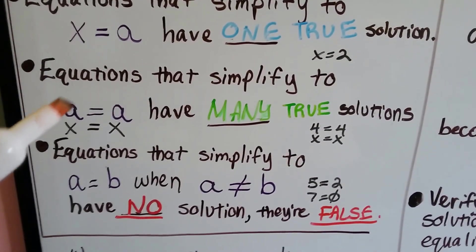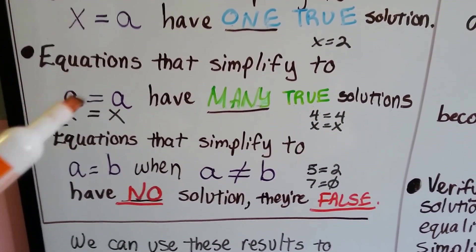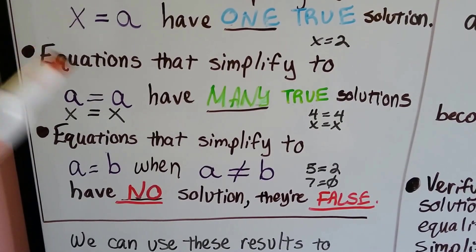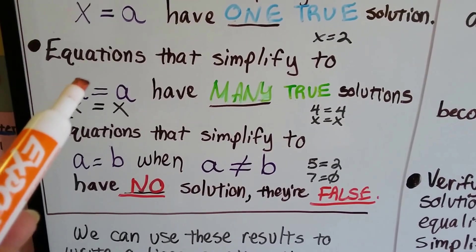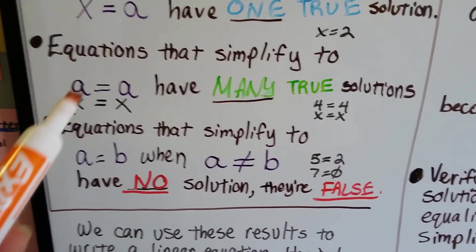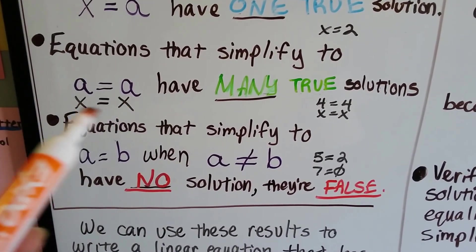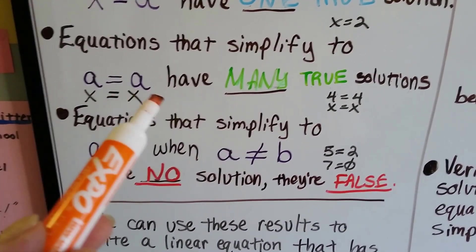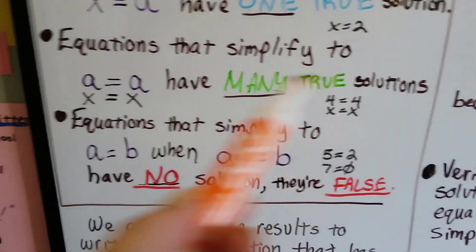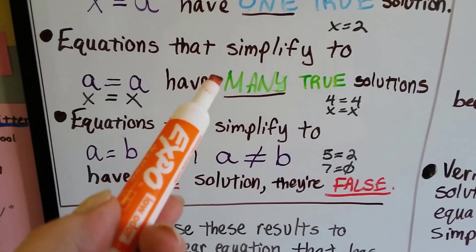Equations that simplify to a equals a, or x equals x, have many true solutions. So that would be like 4 equals 4, or 16 equals 16, or negative 5 equals negative 5. Or if you do your inverse operations and you get it down to isolating x equals x, that could be any number equals any number. That could be infinitely many true solutions.